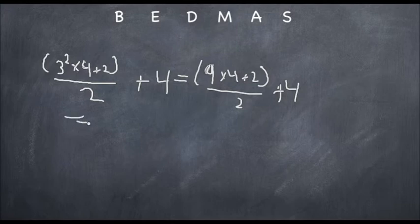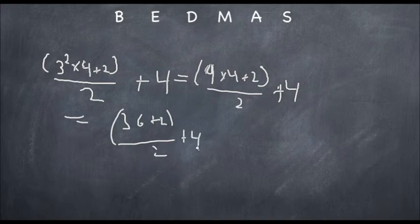Then what do we do next? We've got in here the brackets. Remember, we still do the brackets first. We've got times and plus. Well, as you can see, multiplication comes before addition, so we have to do the multiplication. So that gives you the 36 plus by 2 in the brackets over 2 plus by the 4.